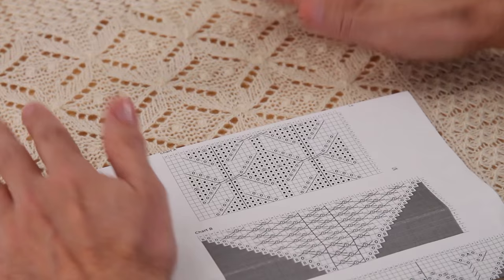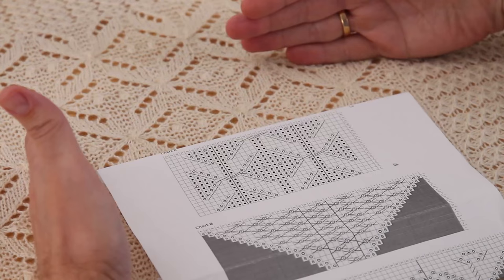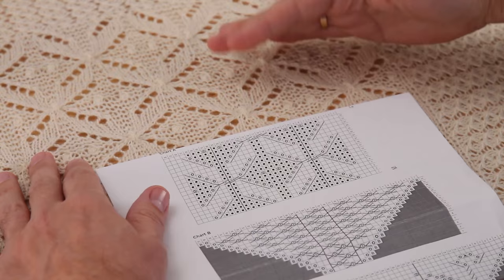All right, so charts. People are intimidated by charts, and it's always interesting as to why. My theory on this is they're a lot better because you can actually see your knitting. You can see where this ends up relating to this.